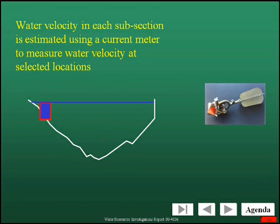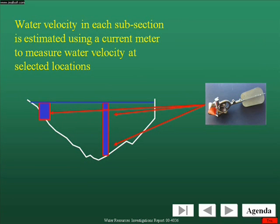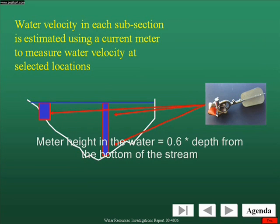Another important step is to measure the flow at the correct depth. For systems deeper than half a meter, you must take two readings at two different depths to find the average velocity — at two-tenths depth and at eight-tenths depth. For systems shallower than half a meter, only one reading is required per subsection, taken at six-tenths of the total depth, found by multiplying the total depth by 0.6.